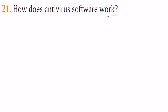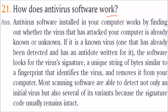How does antivirus software work? Antivirus software installed in your computer works by finding out whether the virus that has attacked is already known or unknown. If the virus is known — already detected with an antidote written for it — the software looks for the virus signature, a unique string of bytes similar to a fingerprint that identifies the virus. Most scanning software can detect not only the initial virus but also several of its variants because the signature code usually remains intact.